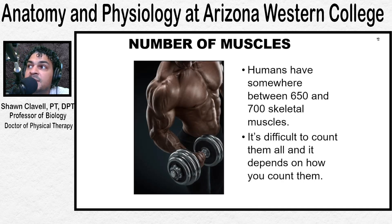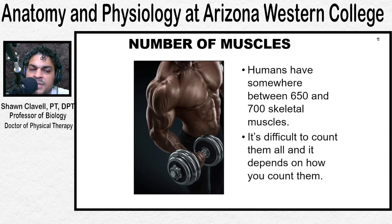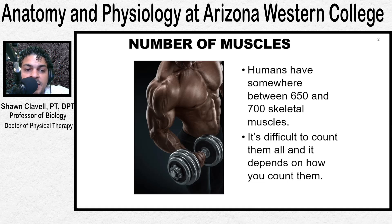We've got about 600 to 700 different skeletal muscles in the body, and really it depends on which muscles we're looking at and how we count them. So there is variation as to how many muscles there are. We'll look at the primary muscles in your next chapter, chapter 11.